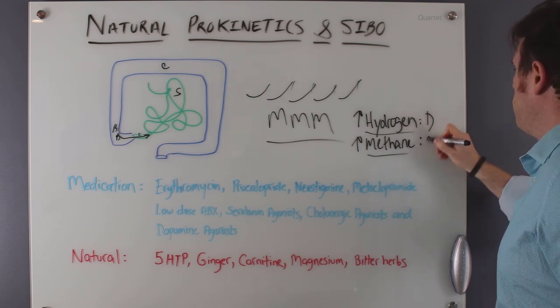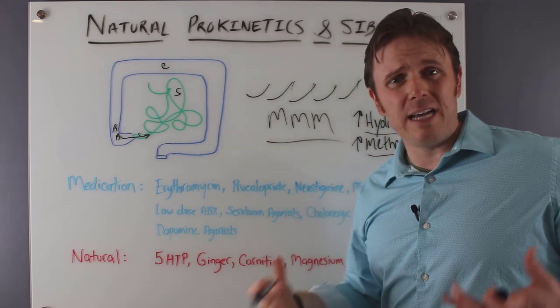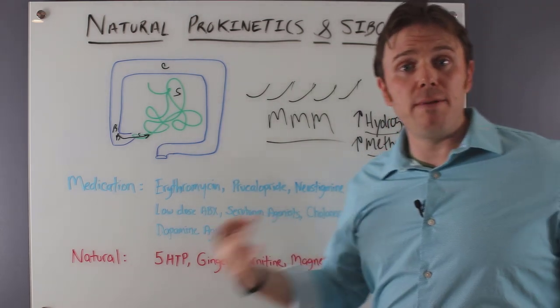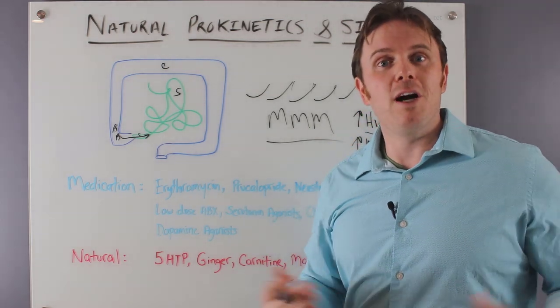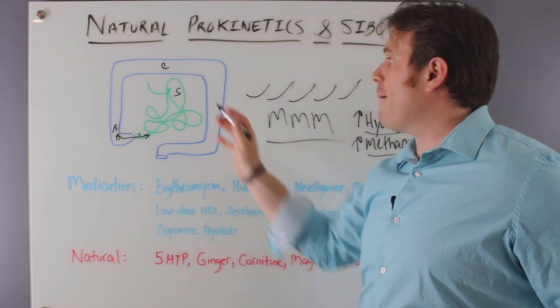And methane, you're going to see more constipation. D for diarrhea, C for constipation. And these are just kind of generalized ideas. You can have hydrogen dominant SIBO and still have constipation. Or you could have both, and you could alternate in between. It's very possible. So this is kind of what's happening.